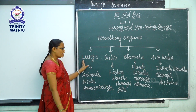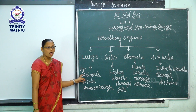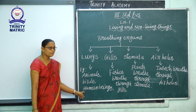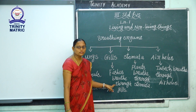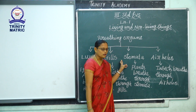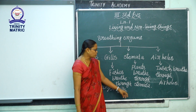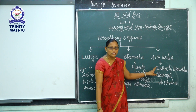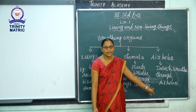Let us see them one by one. First, lungs — animals, birds, and human beings breathe through lungs. Next, gills — fishes breathe through gills. Next, stomata — plants breathe through stomata. Next, insects breathe through air holes, and another name for air holes is spiracles.